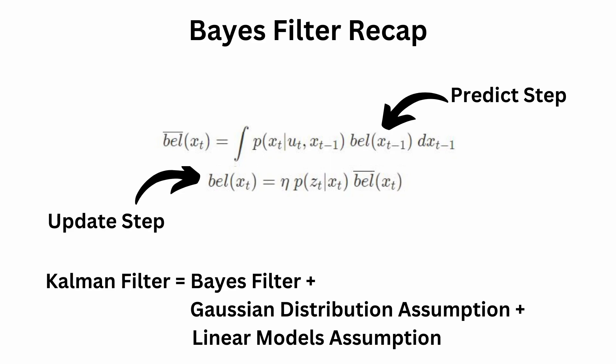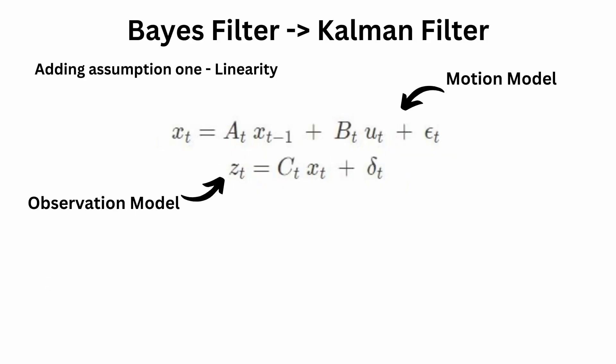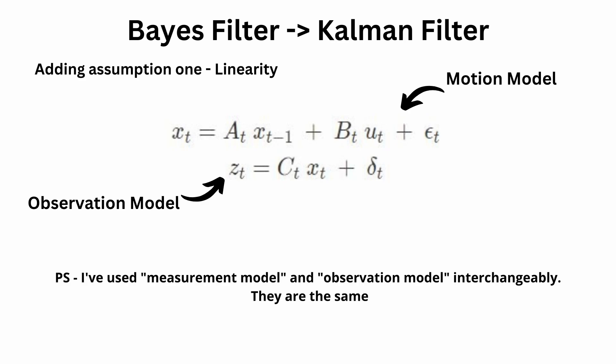In scenarios where these two assumptions are strongly valid, the Kalman filter is the best possible estimation tool. We wish to estimate the position of a robot over time, where the motion model and observation models are linear and all distributions are Gaussian. As a side note, the real world is not perfectly Gaussian or linear, so the Kalman filter may not be optimal in those cases. Coming back to our Bayes filter equations, let's now introduce these two assumptions mathematically, starting with the first assumption of linearity.